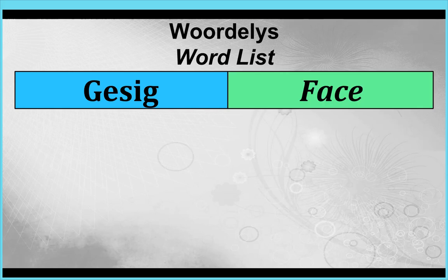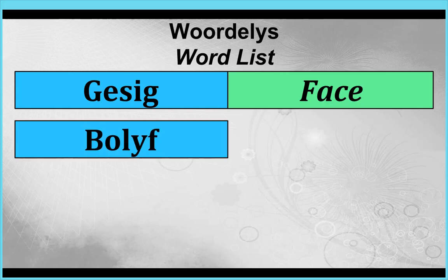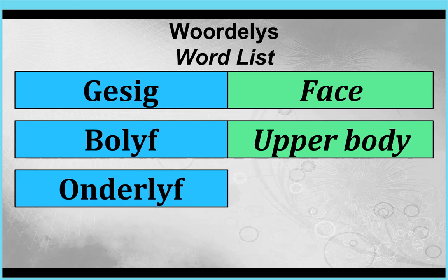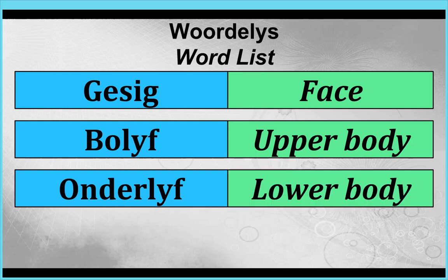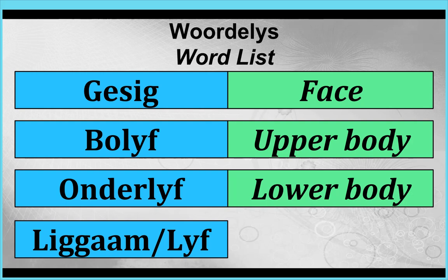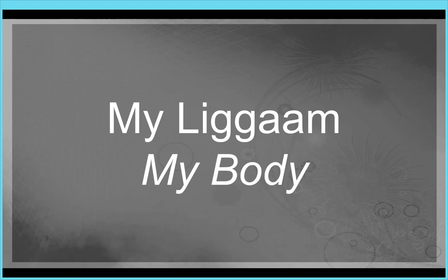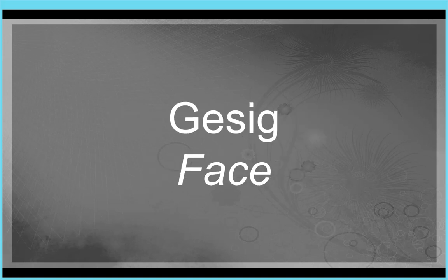Gesig - face. Bolyf - upper body. Onderlyf - lower body. Liggaam or lyf - body. My liggaam - my body. And first we will have a look at the face, gesig.